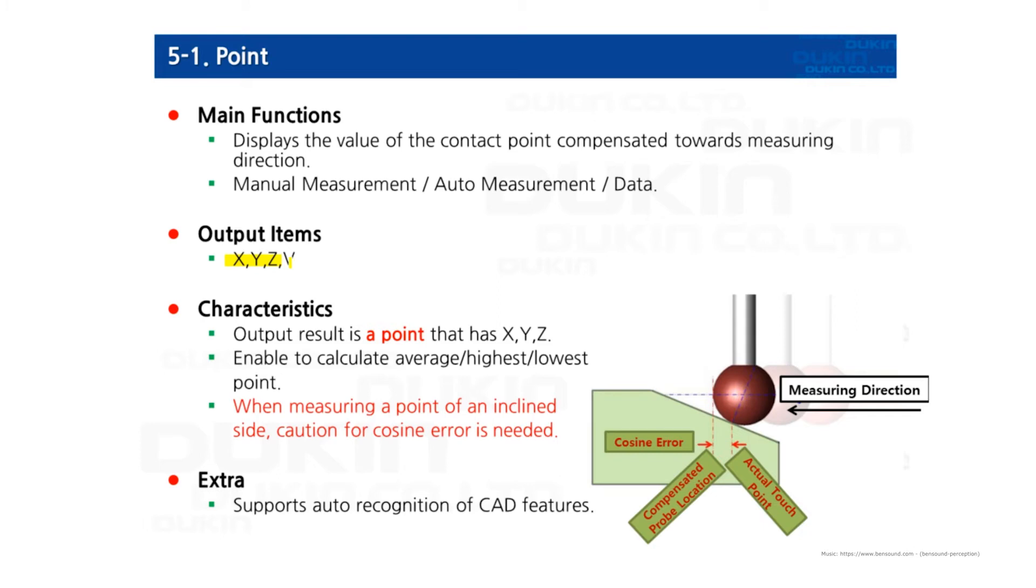And then your measure is compensating the value as much as the calibrated radius with the same direction as the measuring vector. But when you measure a point on the tapered plane, a sine error will occur, so it is important to compensate the measuring direction as same as the plane's axis. Here is the information for this characteristic.